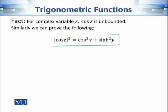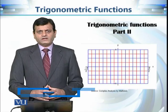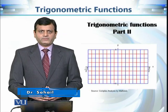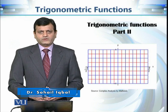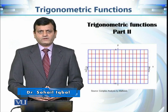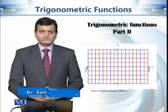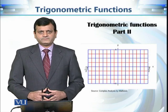For the cosine case, we first prove the analogous modulus identity and then take the limit, showing by similar reasoning that cos(z) is also an unbounded function in the complex case. In this part we discussed further properties of complex trigonometric functions, and we will continue this discussion in the next module.